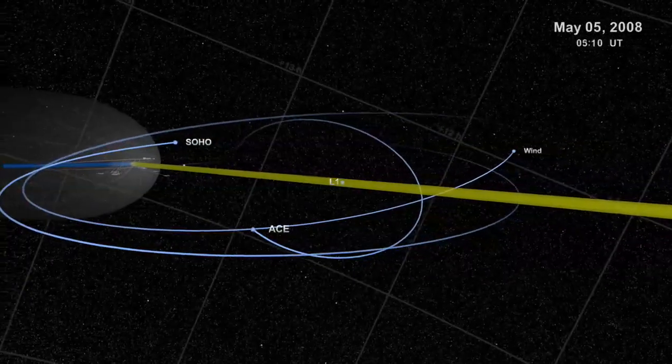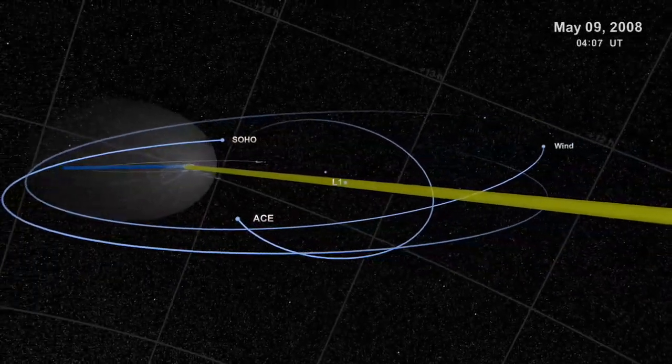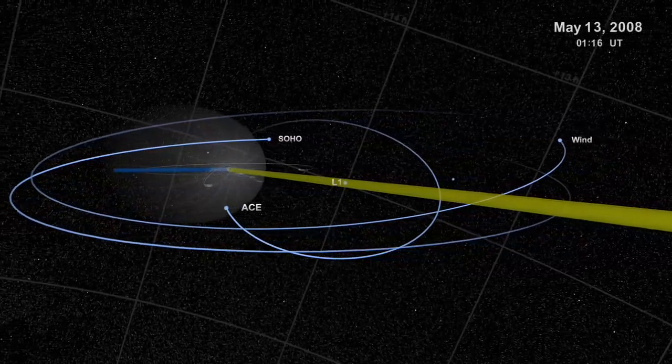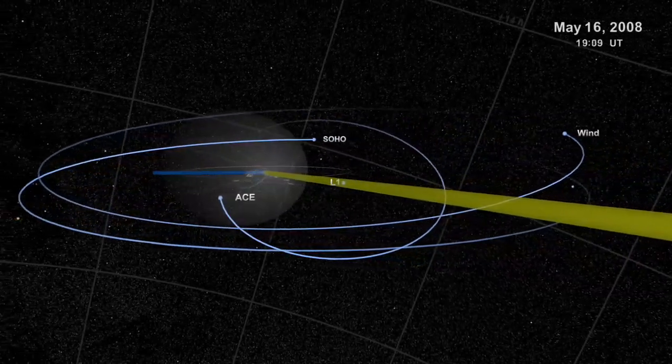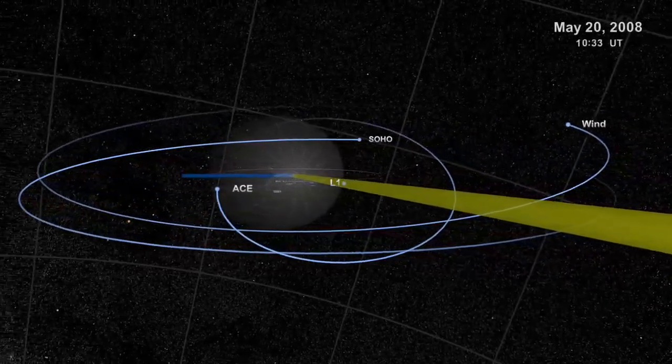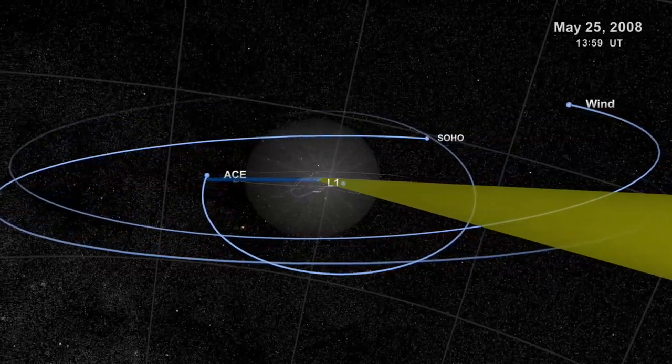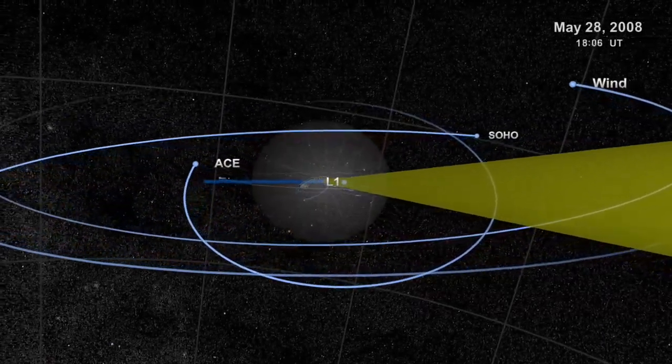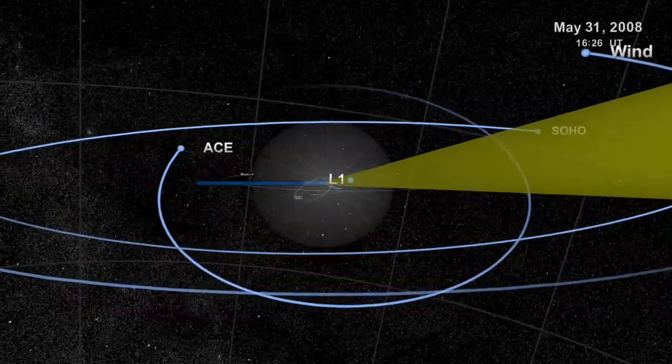These so-called halo orbits around L1 make good places for hovering spacecraft to take observations of either the Earth or sun. We find a number of observatories patrolling out here, including an extremely famous and extremely successful solar observatory called SOHO.